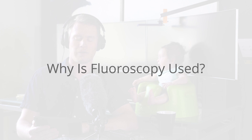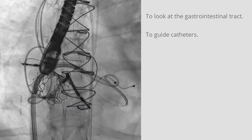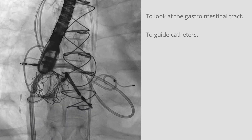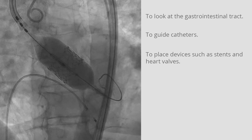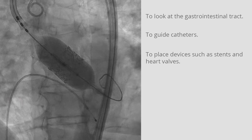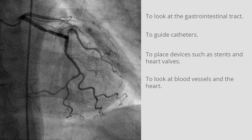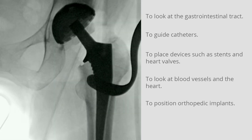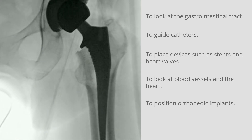Fluoroscopy is often used for the following purposes: to look at the gastrointestinal tract; to guide catheters through blood vessels, bile ducts, and the urinary system; to place devices such as stents in the body; to look at blood vessels and organs such as the heart — a practice called angiography; and to position orthopedic implants such as artificial knees and hips.